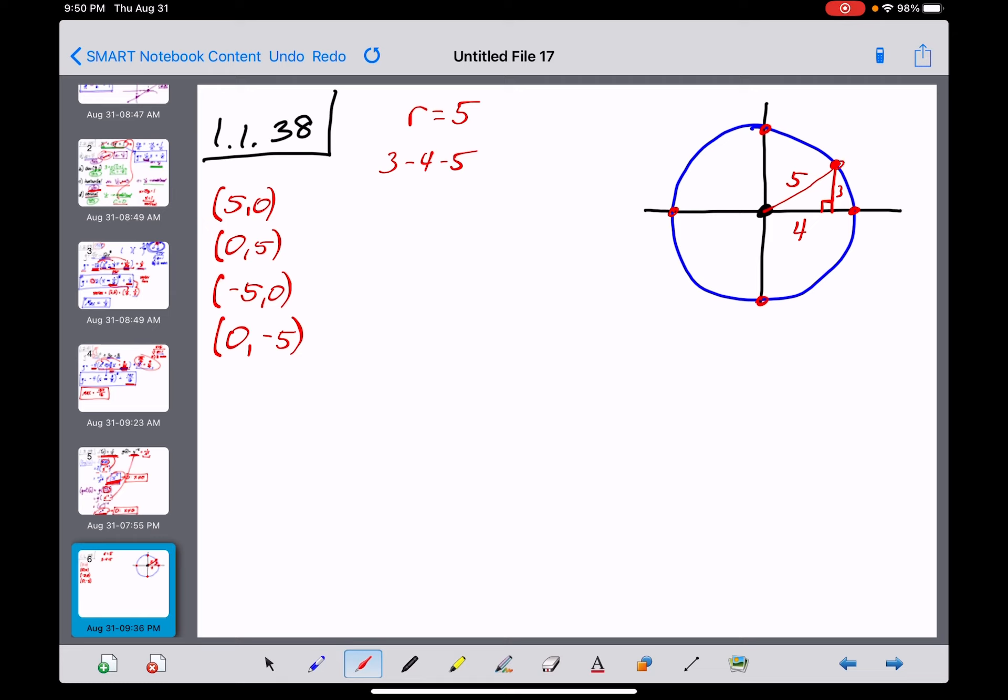So the coordinates of this point then, starting from the origin, would be 4 to the right and 3 units up. So we get the ordered pair (4,3). That's another ordered pair with integer coordinates that's 5 units from the origin.